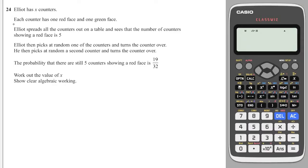If Elliot has X counters, each counter has one red face and one green face. Elliot spreads the counters on the table and sees the number of counters showing a red face is 5. He then picks one counter and turns it over, then he picks a second counter and turns that over. The probability there are still 5 counters showing red is 19 over 32, find the value of X.